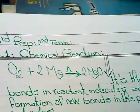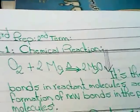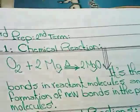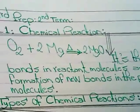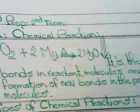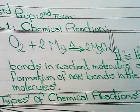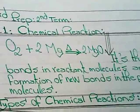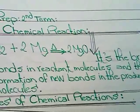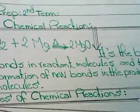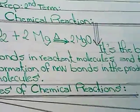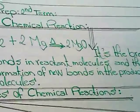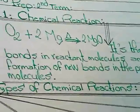In the equation in front of you, we can notice that oxygen gas can react with magnesium strip to Mg by burning to get a white powder of magnesium oxide. In this reaction, we can define chemical reaction as the breaking of bonds in reactant molecules and the formation of new bonds in the product's molecules.